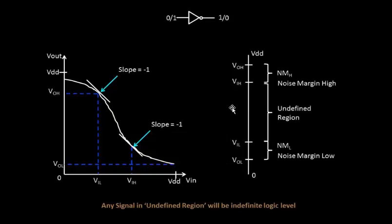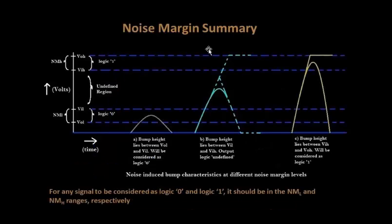Any bump that lies in this undefined area goes into an undefined state, meaning it can be either logic 1 or logic 0. With this scale in mind, we have prepared a chart that gives a summary of noise margins. The chart shows noise margin high, noise margin low, and the voltage curve. Noise margin high is VOH minus VIH, noise margin low is VIL minus VOL. Anything in the NMH range is logic 1, anything in the NML range is logic 0, and anything in between is the undefined region.